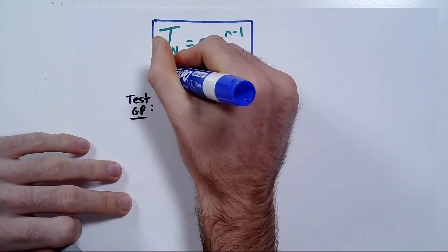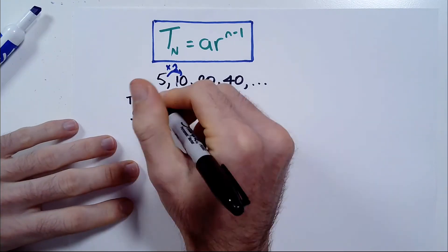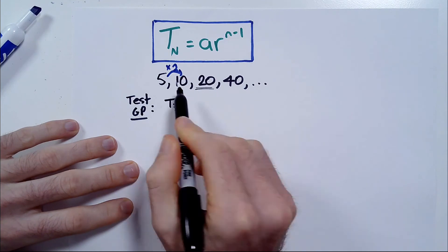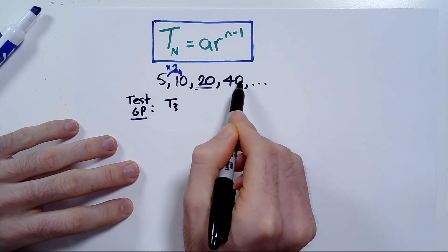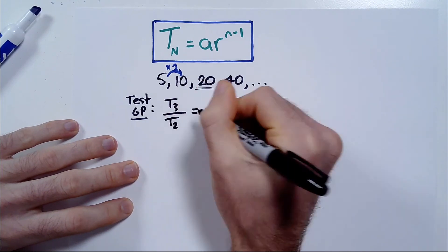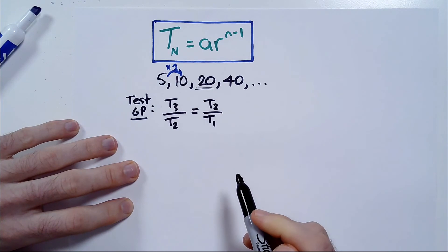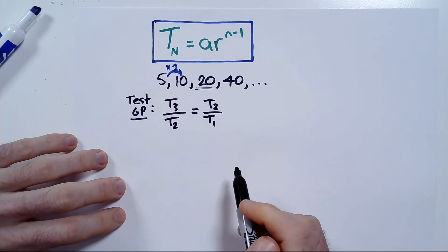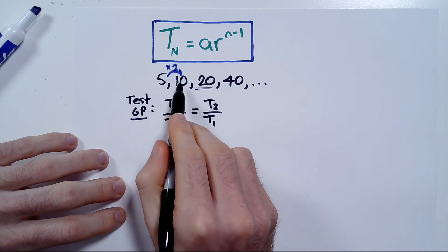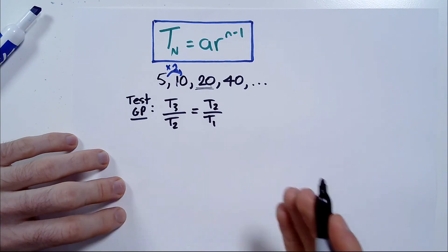But the way to actually prove that in a formal way is to actually divide the third term, and the third term here by the way is the 20 because this is the first term, this is the second term, this is the third term, the fourth, and so on. You divide the third term by the second term, and you check to see if the second term divided by the first term gives the same ratio. It's basically the number by which each number in the series is multiplied to get to the next number. We have to make sure that that number is the same for all of them.